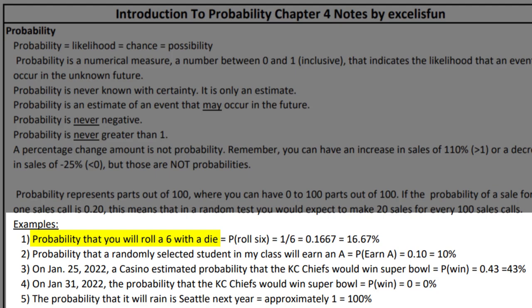What's the probability that you can roll a 6 with a die? How many sides are there? Six. The number 6 is one of those sides, so we take 1 divided by 6 — there's the probability of rolling a 6. Another example: what's the probability that a randomly selected student in my class will earn an A? Based on past data, 10% of students get an A.